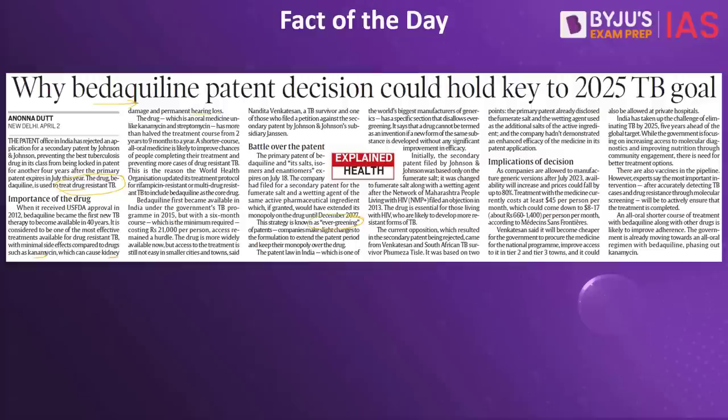This drug was given permission and a patent by the United States, granting exclusive rights to the manufacturing organization for many years so no other company could produce it. But this patent is coming to an end in July 2023. As the patent period ends, the organization that created this drug is going for secondary patenting — extending the patent a second time. The second time the patent is wished to be extended is called secondary patenting, also known as evergreening.